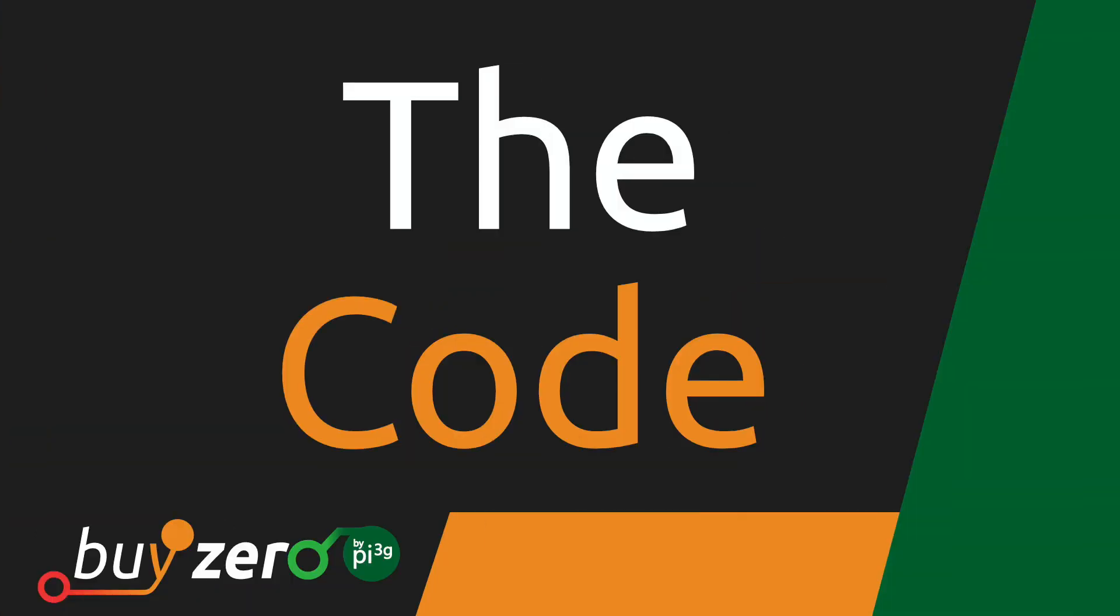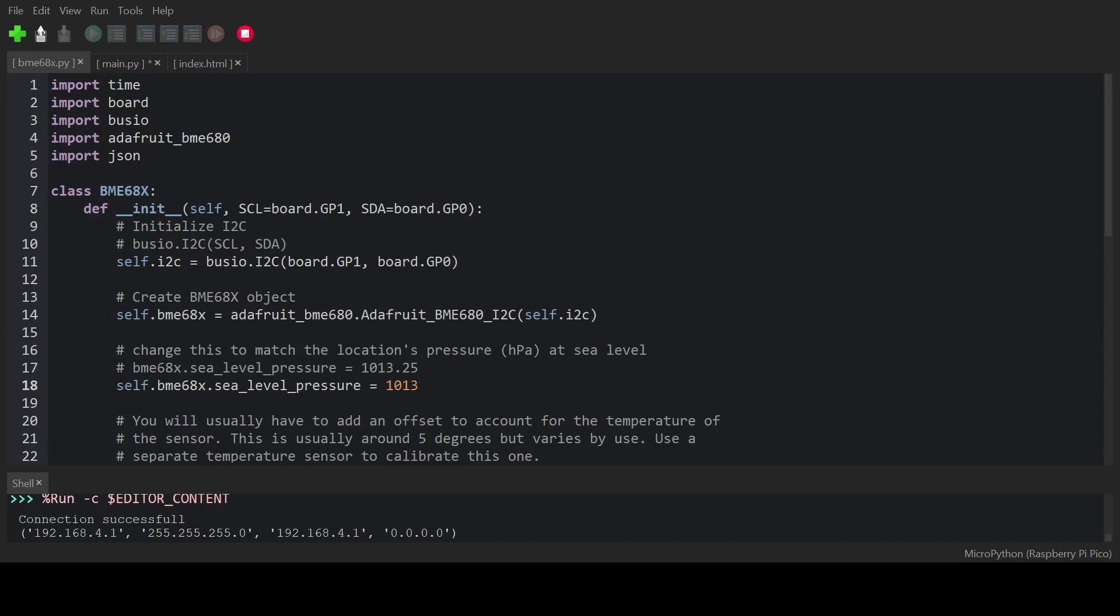Now let's have a look at the code. If you have seen one of our other examples, most parts of the code should look familiar to you. If you need a refresher on how to set up MicroPython and Thony for the Pico W, then check out this video. The code for this project can be found on our Pico W GitHub repository. The link is in the description.